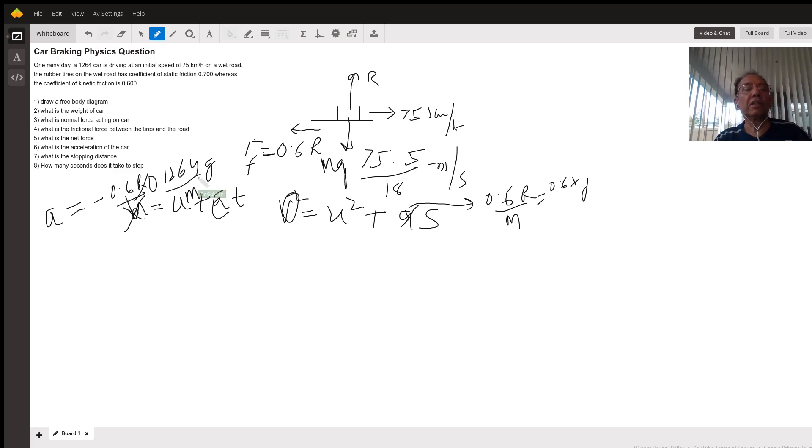Once you get the deceleration, you can use the formula for motion: v² equals u² plus 2as, where a is negative. You can find the distance with final velocity being zero.